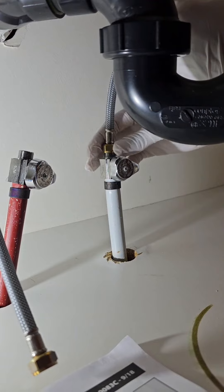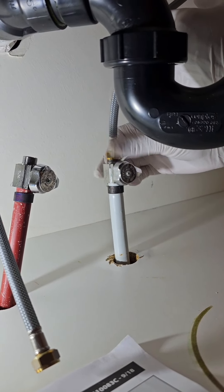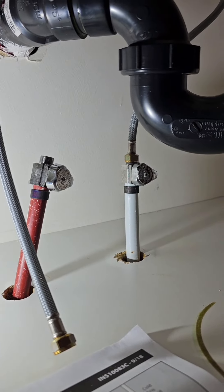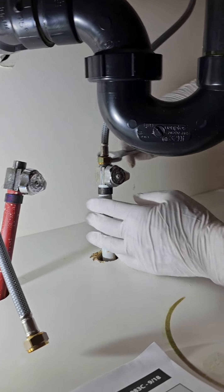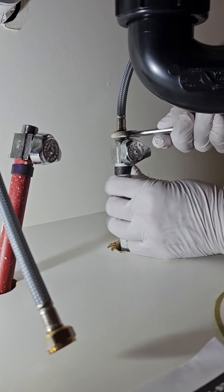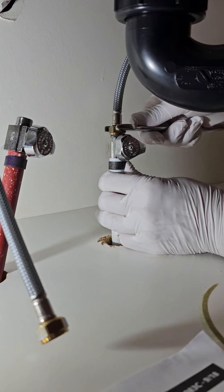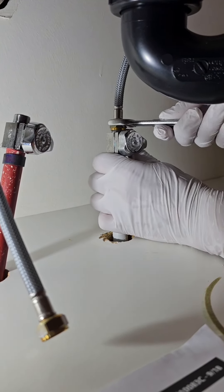Hook up the water lines, hand tighten them so you don't cross-thread them. Cold water goes to the right and hot water goes to the left. Finish with a wrench but don't over tighten.